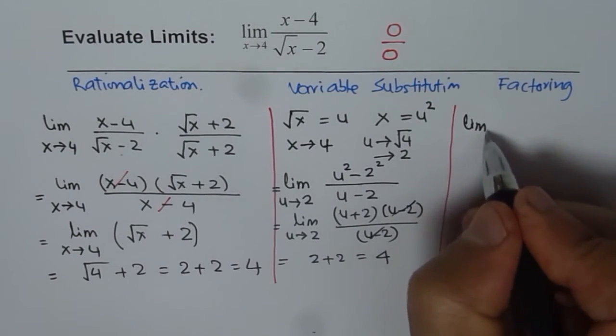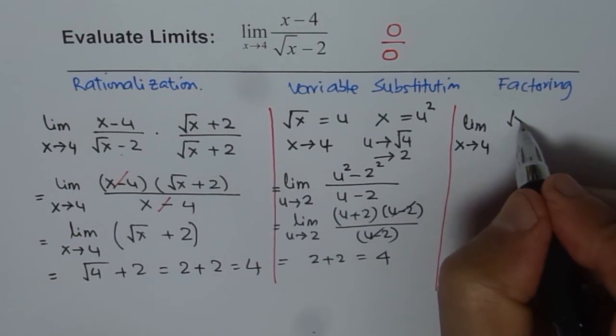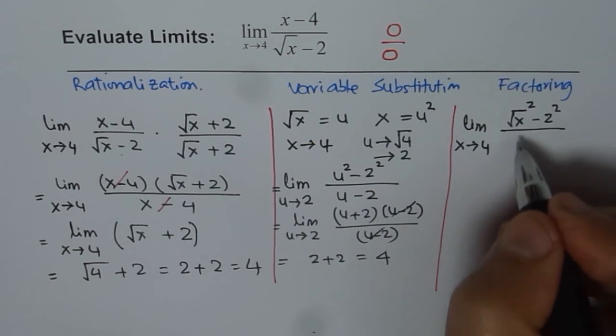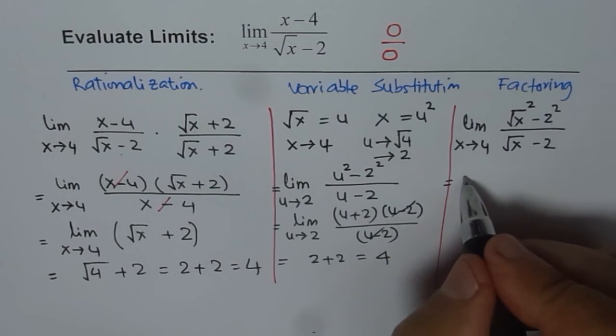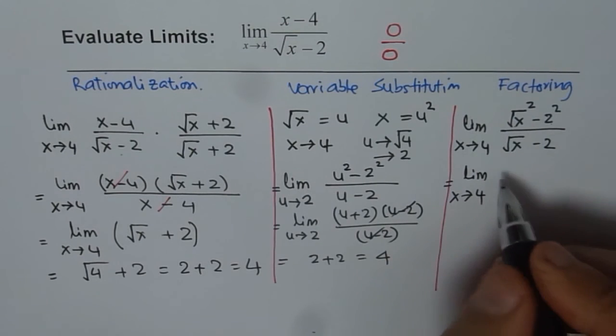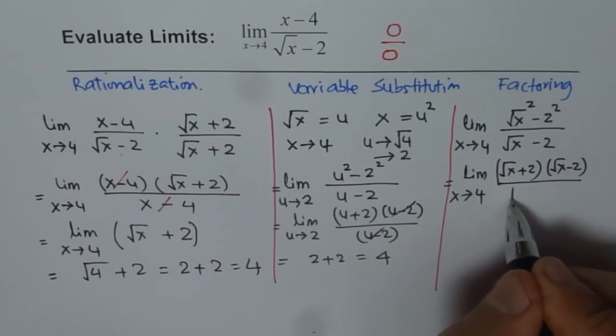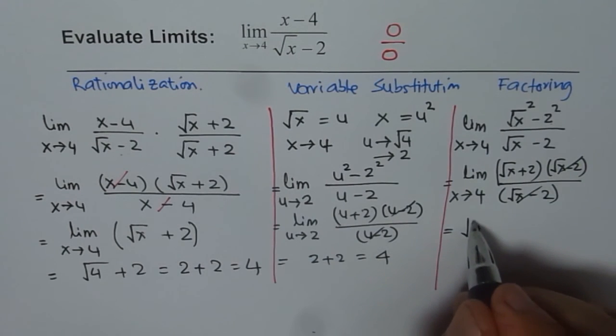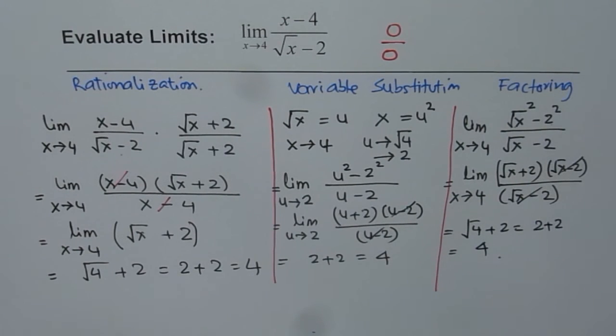Factoring. Well some of you who are really experts on factoring can easily see that I can factor x minus 4. I can write this as square root of x whole squared minus 2. So we can say limit x approaches 4, numerator should be square root of x plus 2 times square root of x minus 2 divided by square root of x minus 2. And these two factors cancel. So I can substitute 4 here. So I get square root of 4 plus 2, which is 2 plus 2, which is indeed 4, same as before.